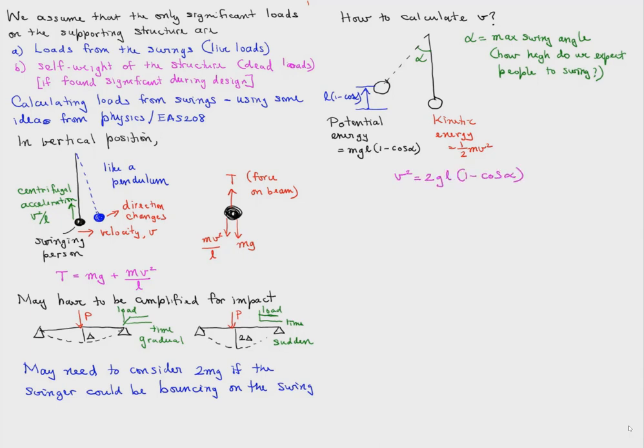So if we equate the two, v squared equals twice gL times (1 minus cosine alpha). That's an estimate for the velocity and, consequently, for the centrifugal force.